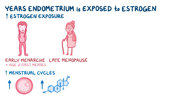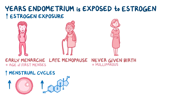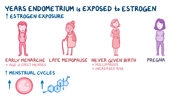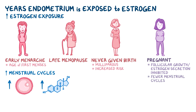The same goes for females who have never given birth, also called nulliparous, who are at higher risk than those who have been pregnant. This is because follicular growth and estrogen secretion is inhibited during pregnancy. Thus, people who have been pregnant will have fewer menstrual cycles in their lifetime compared to someone who hasn't.